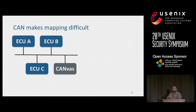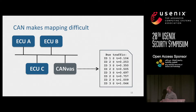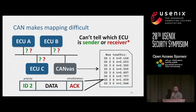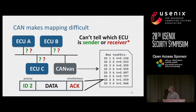Unfortunately, the CAN protocol makes mapping hard. If we connect our tool to the network, we get IDs and timestamps of transmission times. The challenge is that an ID only indicates priority, not information about the message sender. And because the ACK bit is sent simultaneously, we don't know exactly who received the message — it could be one or all of the ECUs in the car.